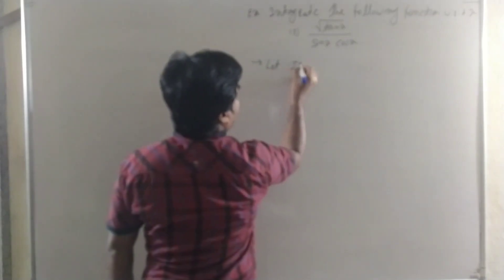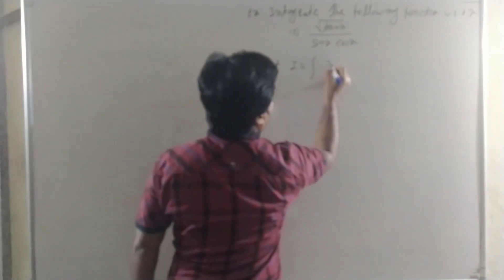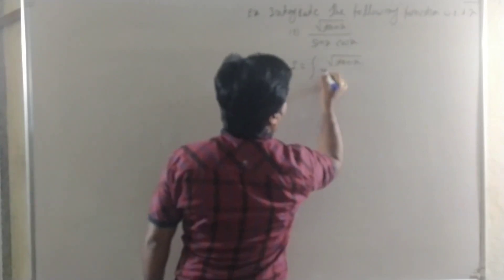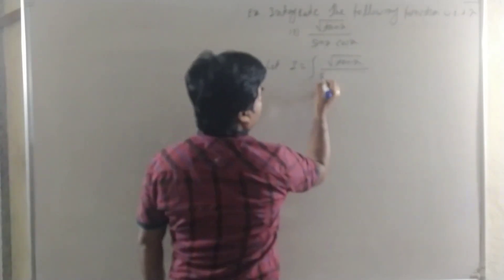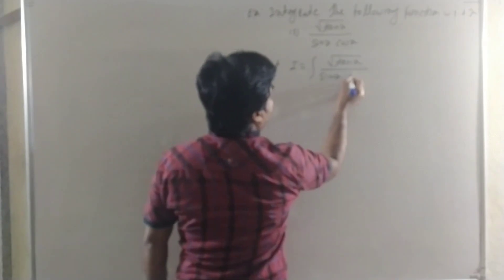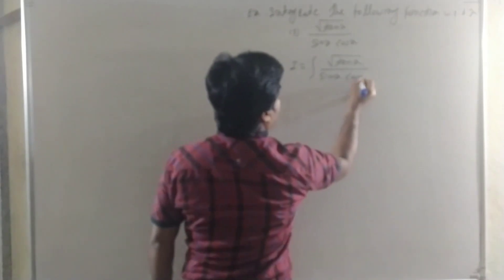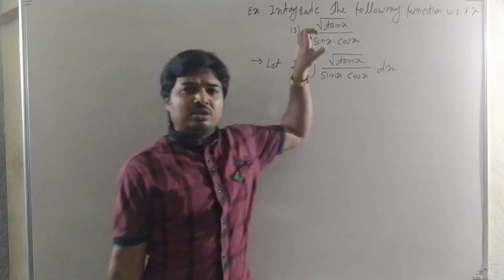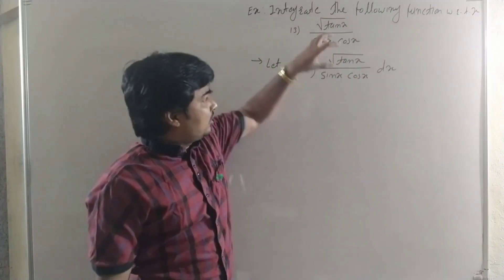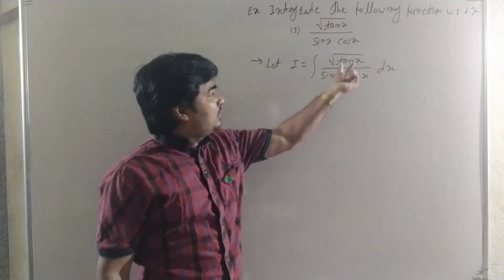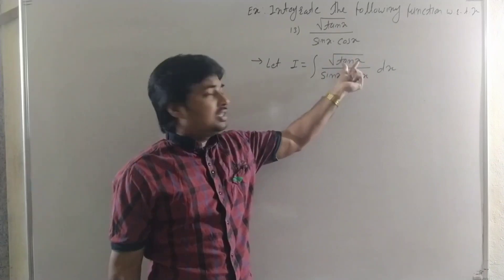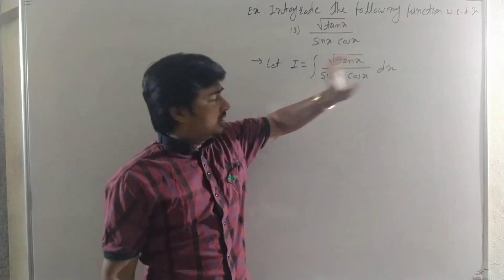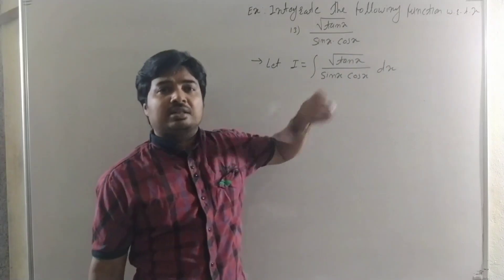Let I = ∫ √(tan x) / (sin x · cos x) dx. This is not in the standard form. Here we consider substitution. The composite function is tan x, and the derivative of tan x is sec²x. But that derivative is not present in the multiple of dx.